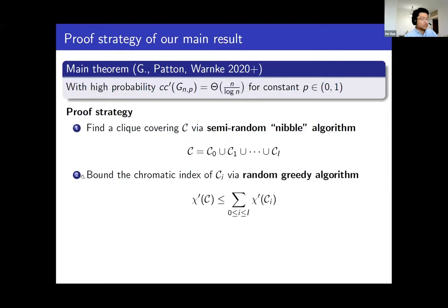For the second part, we need to color the cliques. Because the covering is a union of sub-collections, the chromatic index of the full covering is at most the sum of the chromatic indices of the sub-collections. To bound the chromatic index of each sub-collection, we use a random greedy approach, and this will imply the required bound.